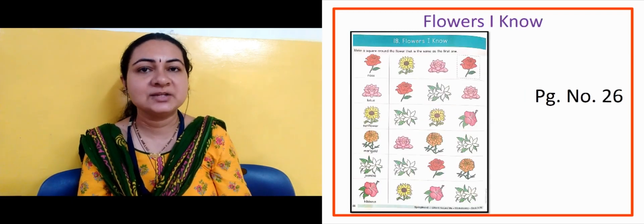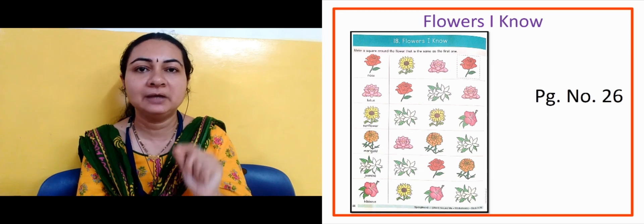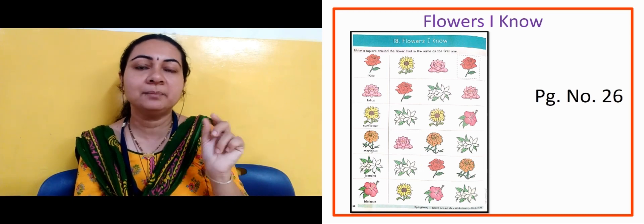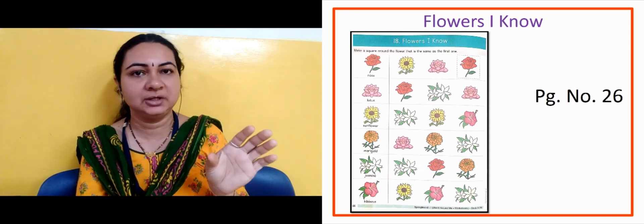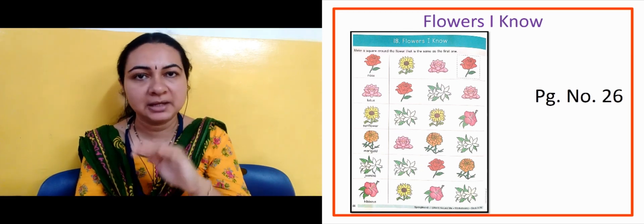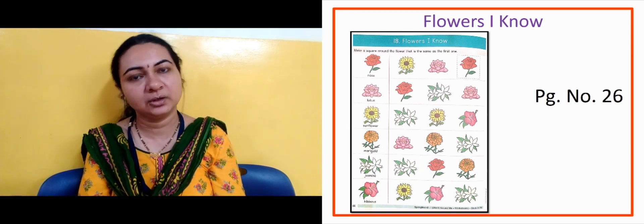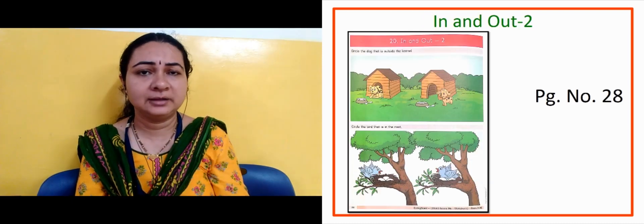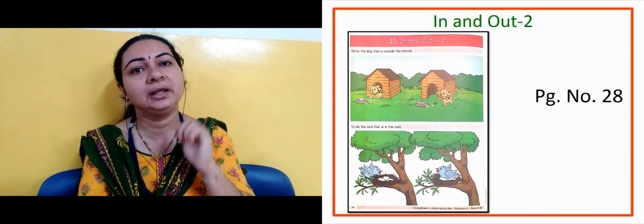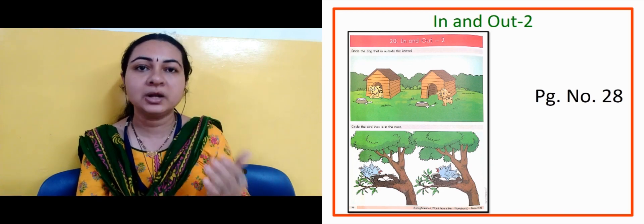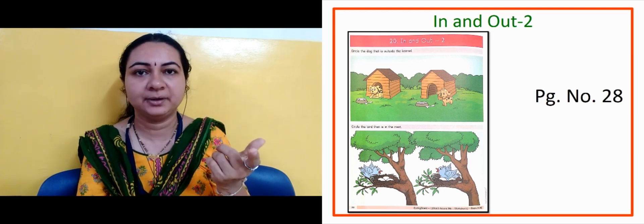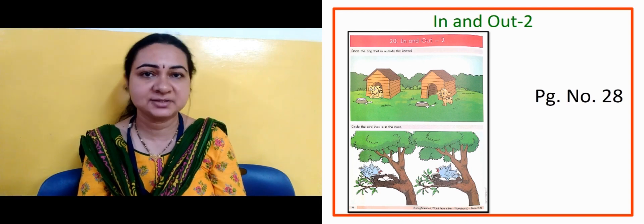Now the next slide. The concept name is 'in and out.' Two images were given — the one labelled 'in,' we circled the object that is inside. And the one that is 'out,' outside — we circled the object that is outside. You need to revise this on page number 26.